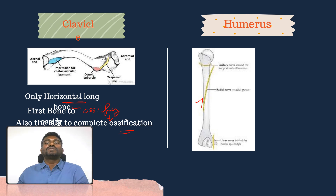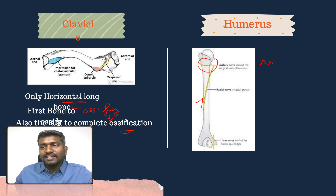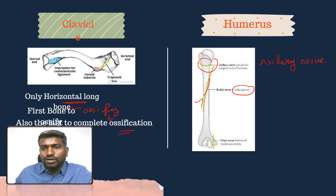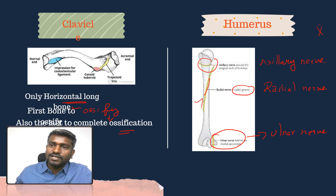Regarding the humerus: the nerve at the surgical neck is the axillary nerve; the nerve at the radial groove or shaft is the radial nerve; and at the medial epicondyle, it is supplied by the ulnar nerve — very important for the exam.